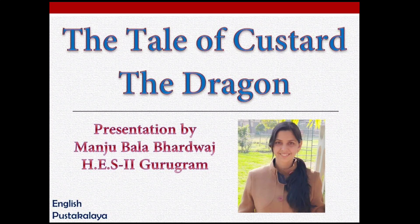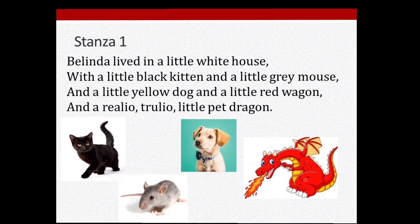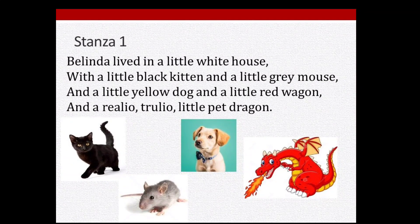Look at the title: 'The Tale of Custard the Dragon.' 'The Tale' means story — Custard is the name of the dragon. So this is the story of Custard the Dragon. Now let's start the poem with a line-by-line explanation, starting from Stanza 1.